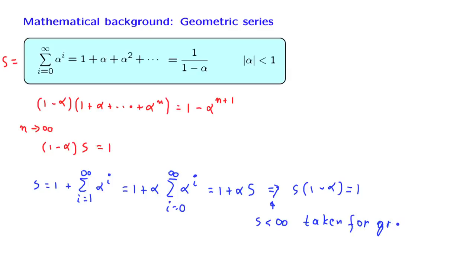This is to be contrasted with the first derivation, in which we didn't have to make any such assumption. So strictly speaking, for this derivation here to be correct, we need to have some independent way of verifying that s is less than infinity. But other than that, it's an interesting algebraic trick.